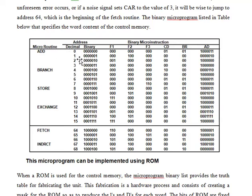We have an address part — address in decimal and binary; the actual representation is binary. Here we have all the micro instructions. From address number 0 to address number 3 we have an add routine. You can review it and analyze the F1, F2, F3, CD, and BR values for your personal understanding. We will focus on Fetch. The purpose of showing you this is that you have a whole micro program divided into several smaller sub-programs.